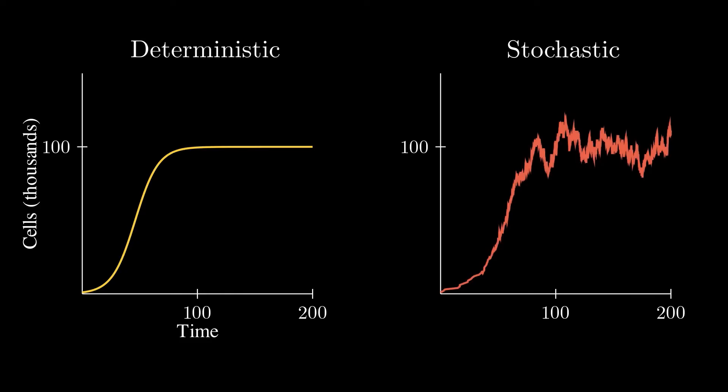On the other hand, this plot on the right is what a stochastic simulation of the same cell population might look like. This model involves randomness in the processes of cell division and cell death. So it looks similar to the deterministic model, except less smooth with more bumps and fluctuations. And if we run the model again, even with the same initial conditions and parameters, we get slightly different results due to the randomness in the model.